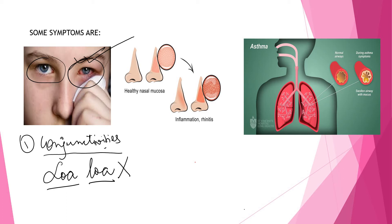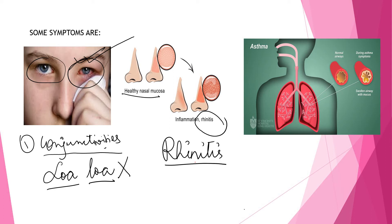Now, if an allergen enters the nose, the person will have rhinitis. Whenever it's related to the nose, the person will have rhinitis. You can see this is the nose of a healthy person, and this is the nose of a person who has come in contact with an allergen and now has the hypersensitive immune response. Allergic rhinitis is inflammation of the mucus membrane that lines the nose.